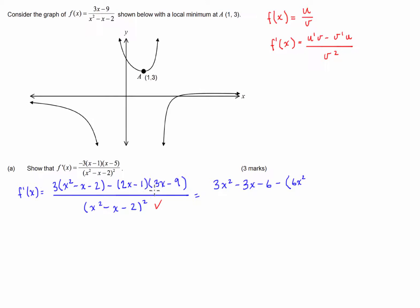Then we're left with minus. Now I'll put this in a bracket for my own benefit. We're going to have 2x times 3x is 6x squared, and then we have negative 1 times 3x is negative 3x, 2x times negative 9 is negative 18, so we have 6x squared minus 21x, and then negative 1 times negative 9 is positive 9. And that's all divided by the denominator, x squared minus x minus 2, all squared.